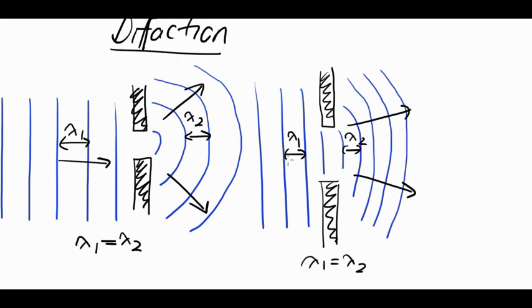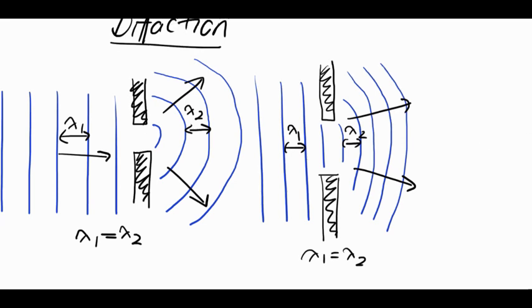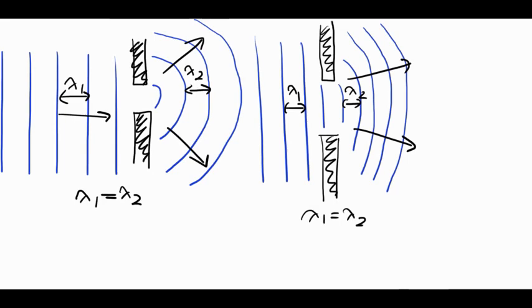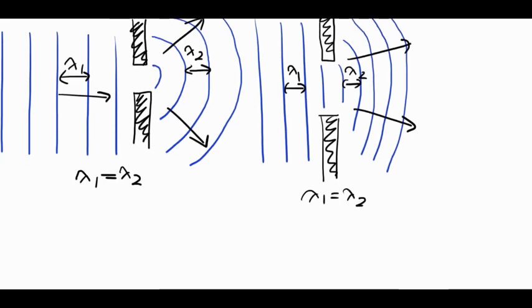Or you could have the same size gap, but you have different wavelengths. So a wave coming in with a large wavelength would diffract more through the same gap as a smaller wavelength coming through the same gap. So the amount of diffraction depends on the size of the wavelength compared to the gap. The smaller the gap, the more it will diffract.